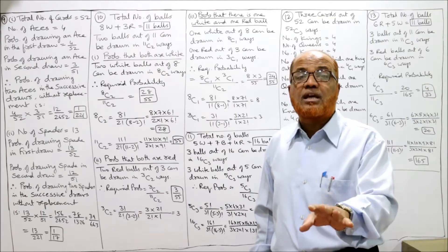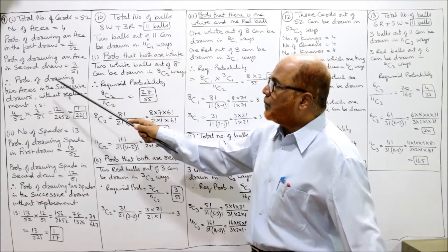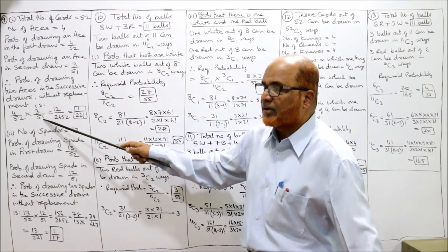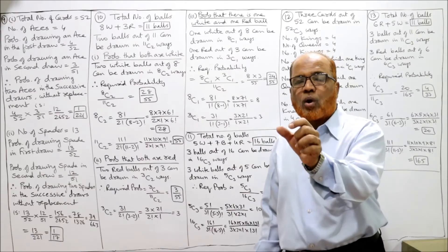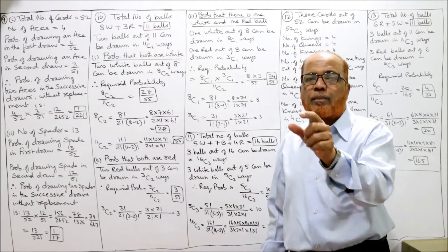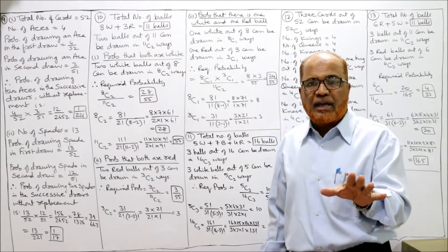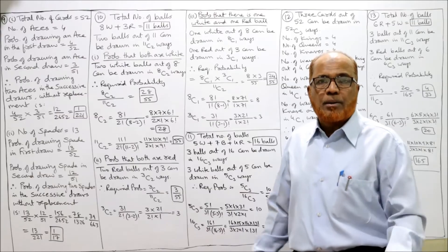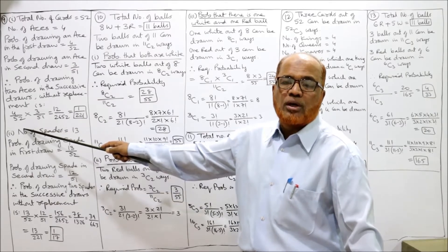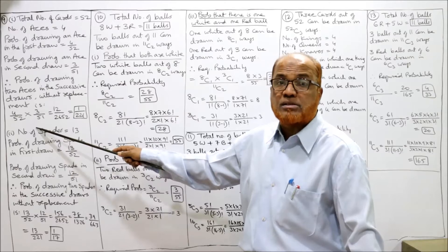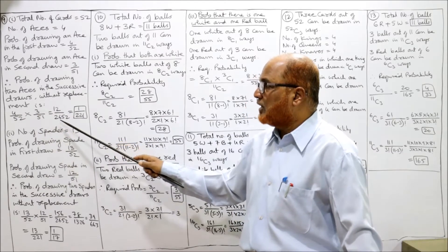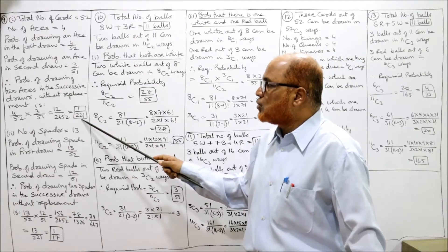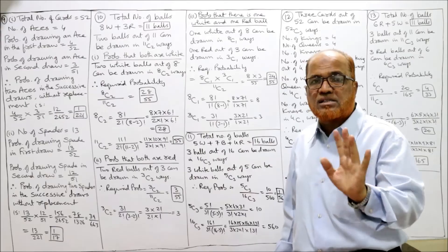The probability of drawing two aces: we apply the multiplication theorem and multiply both probabilities. 4/52 is the probability of drawing an ace in the first draw, and 3/51 is the probability of drawing an ace in the second draw without replacement. Multiplying: 4 × 3 = 12, and 52 × 51 = 2652. Simplifying 12/2652 gives 1/221, which is the required probability of drawing 2 aces in successive draws without replacement.